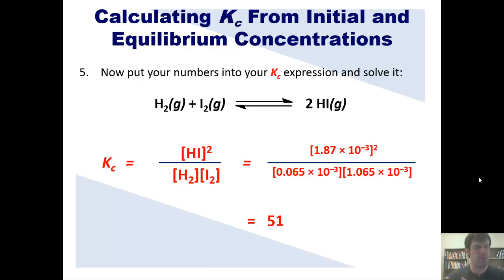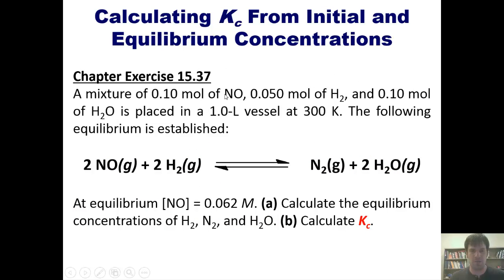I'm going to leave you then with some beautiful problems. The first says a mixture of this many moles of NO, that many moles of H2, and that many moles of H2O is placed in a 1 liter vessel at 300 kelvins. The following equilibrium is established. At equilibrium, the concentration of NO is this. Calculate the equilibrium concentrations of these species, and then calculate Kc. I'm not going to show you how to do that in this video right here, but I will give you the hint that you have to do it using an ice table, as I just illustrated with the previous example. If you'd like, you can pause the video here and attempt to do it on your own. You can then click the link down here in which I will do it for you on the board.